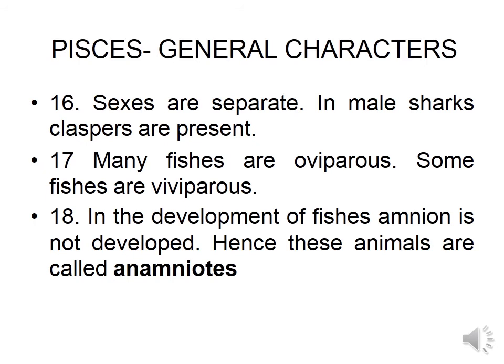Sexes are separate and gonads are typically paired. In male sharks, claspers are present that help in transfer of sperm into the female. Many fishes are oviparous, some are viviparous. In the development of fishes, amnion is not developed; hence these animals are called anamniotes.